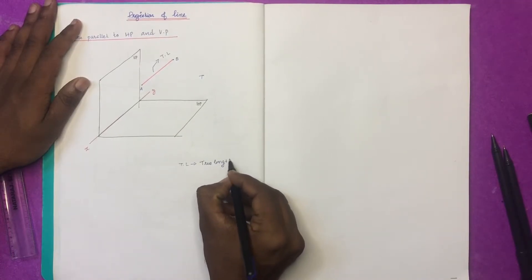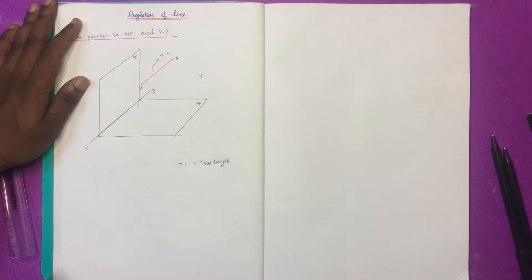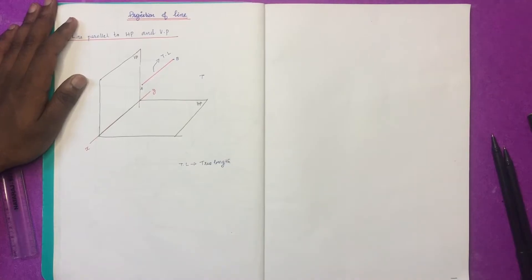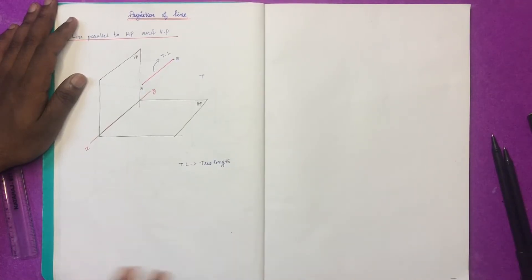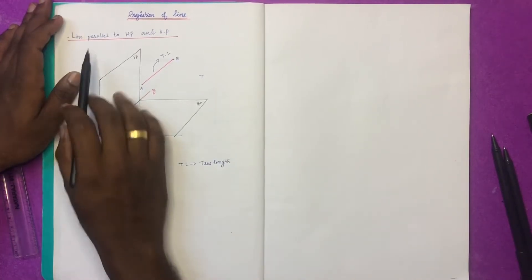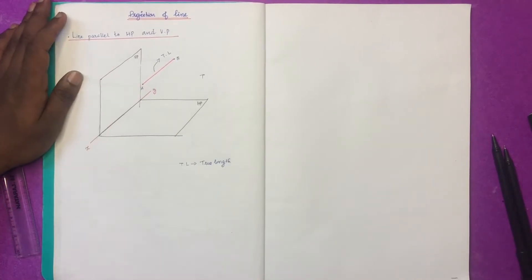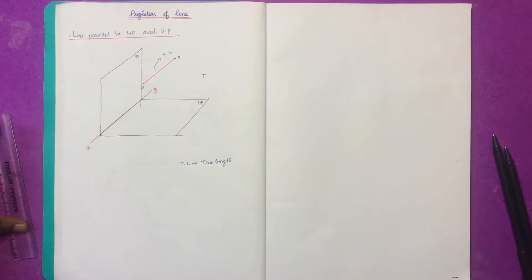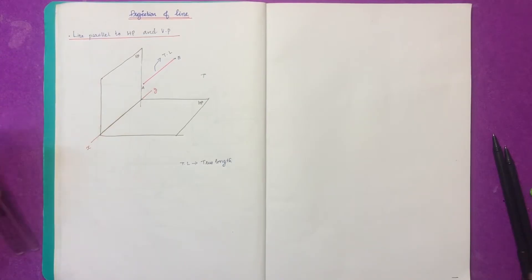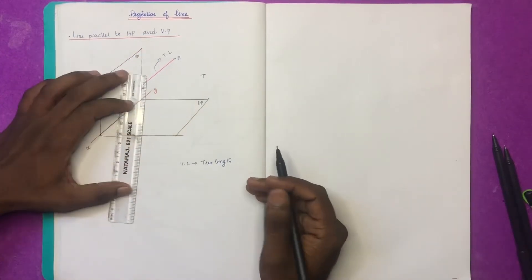That is the actual length of the line. If the line is parallel to the HP, I will show you the meaning in the video.